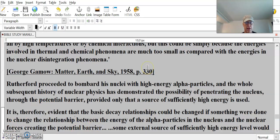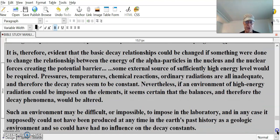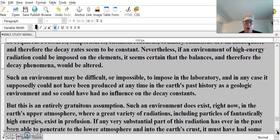It is therefore evident that the basic decay relationships could be changed if something were done to change the relationship between the energy of the alpha particles in the nucleus and the nuclear forces creating the potential barrier. Some external source of sufficiently high energy level would be required. Pressures, temperatures, chemical reactions, ordinary radiations are all inadequate, and therefore the decay rates seem to be constant. Nevertheless, if an environment of high energy radiation could be imposed on the elements, it seems certain that the balances and therefore the decay phenomena would be altered.